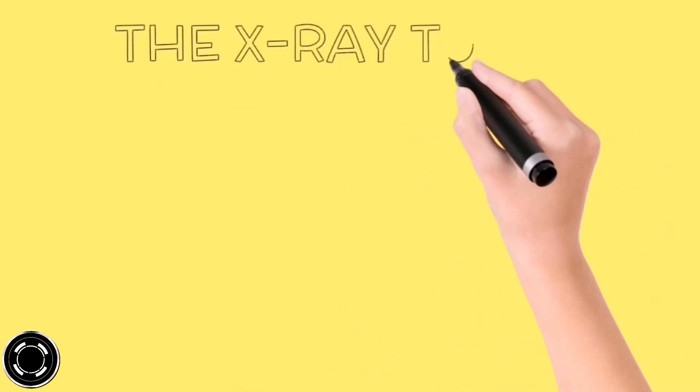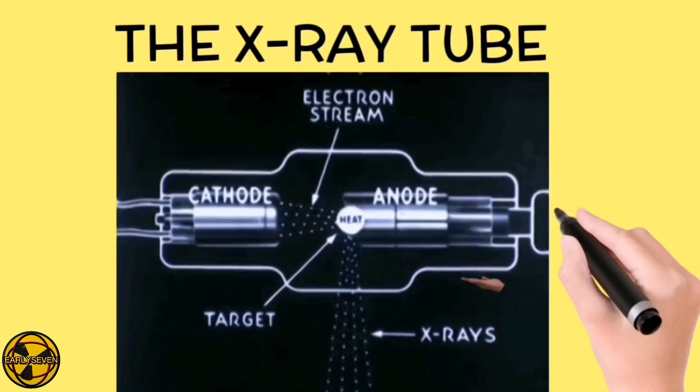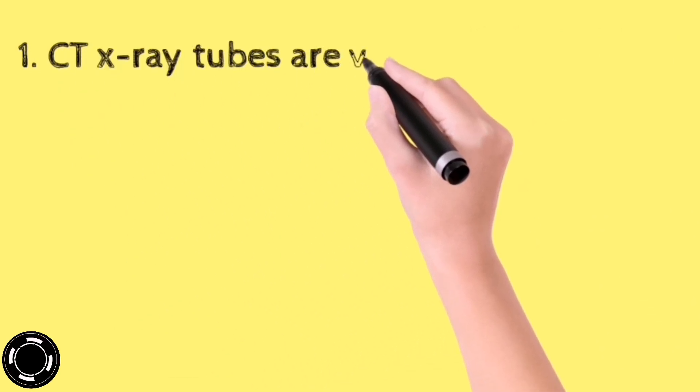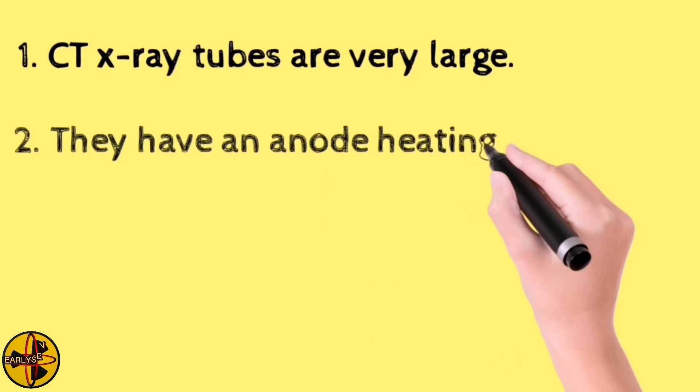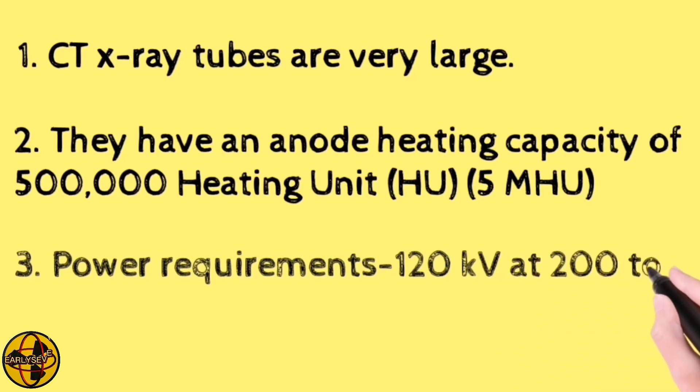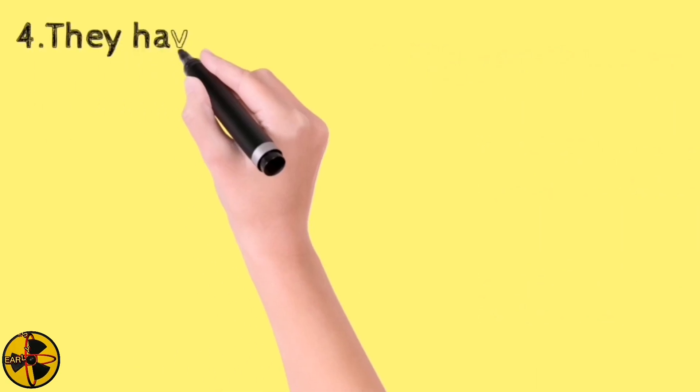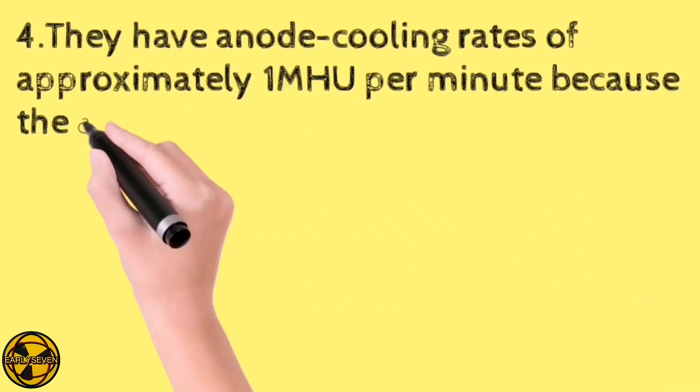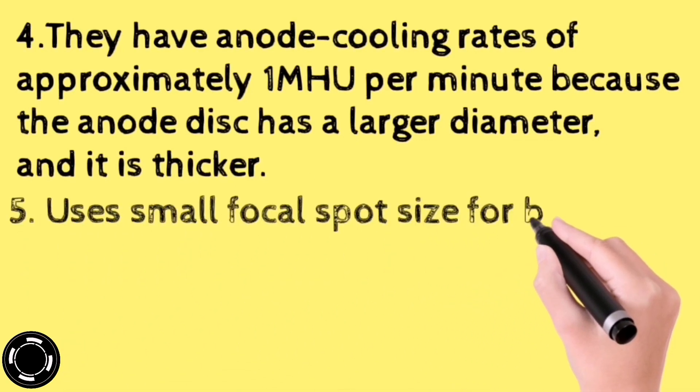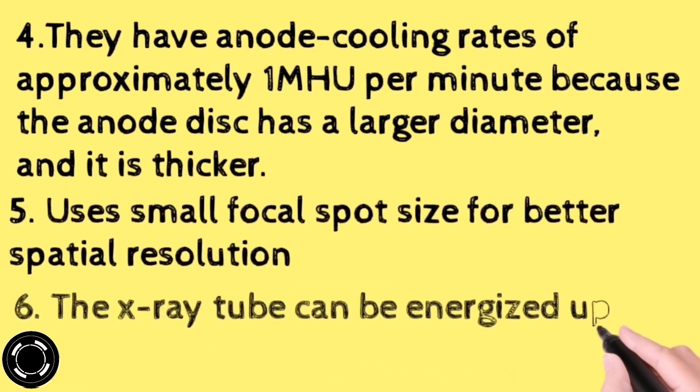The next component of computed tomography or a CT scanner is the x-ray tube. The CT scan x-ray tubes are very large. They have an anode heating capacity of 500,000 heating units. The power requirements for a CT scanner is 120 kV at 200 to 500 milliampere. They have an anode cooling rates of approximately 1 mhu per minute, because the anode disk has a larger diameter and it is thicker. It uses a small focal spot size for better spatial resolution. The x-ray tube can be energized up to 60 seconds.